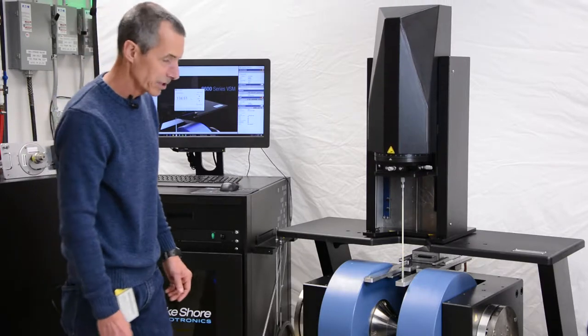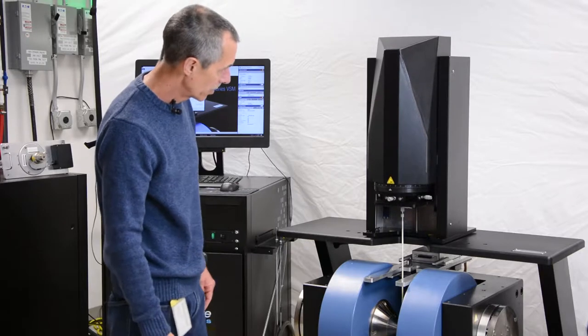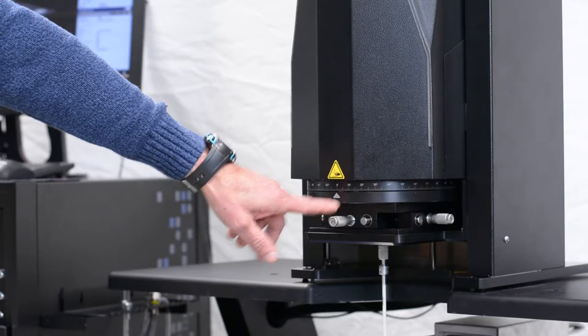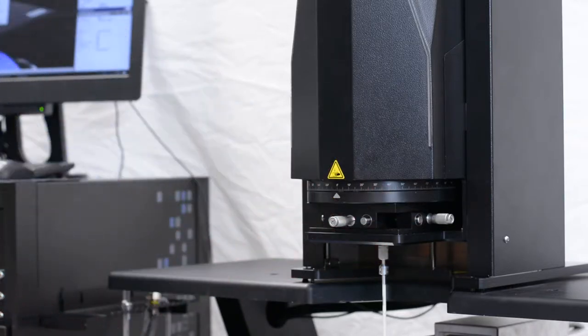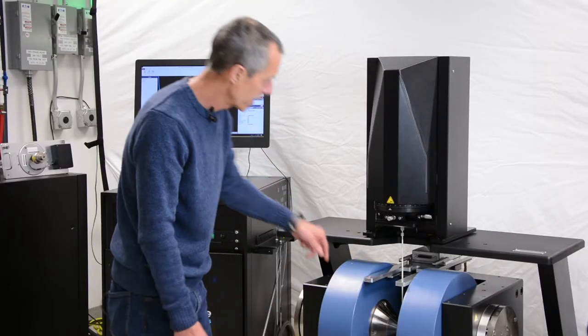Now for positioning or saddling the sample within the sensing coils, we have three independent controls. We have precision micrometers here and here for adjusting the sample in both the X and the Y direction, respectively. For positioning the sample in the Z direction, this is actually handled through the software.